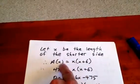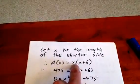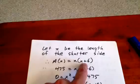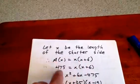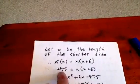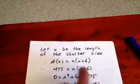Then, we know that area equals length times width. So, one side length is x, one side length is x plus 6. We know the area to be 475, so we can say 475 equals x times x plus 6.